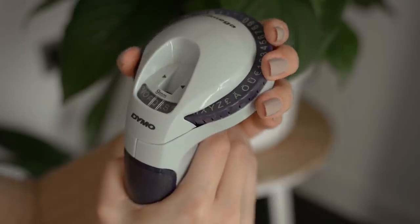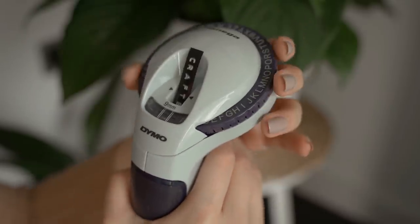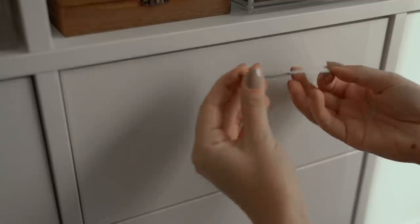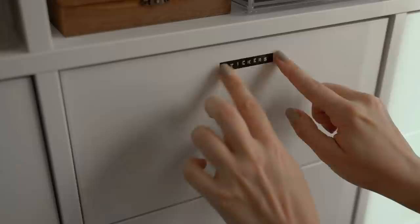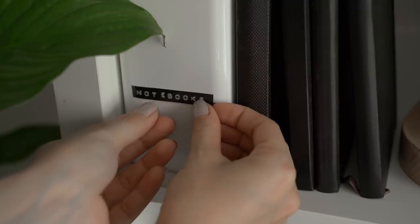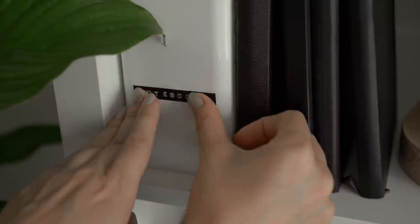Finally, I used my label maker to make labels for all the different drawers and boxes and folders. This is not only for functionality purposes, although at first it was kind of hard to remember where I had placed everything, so these did come in handy, but I just also like the way that it looks.